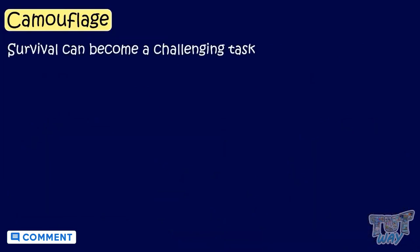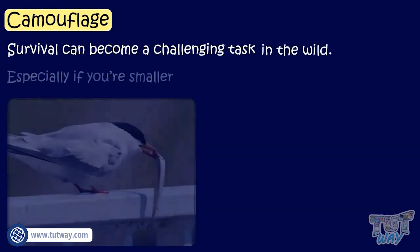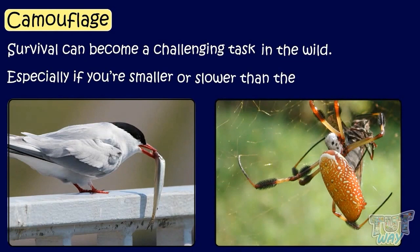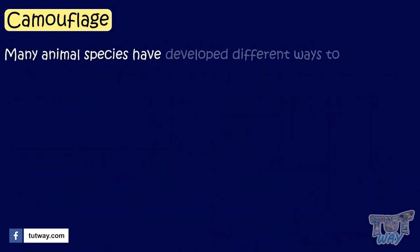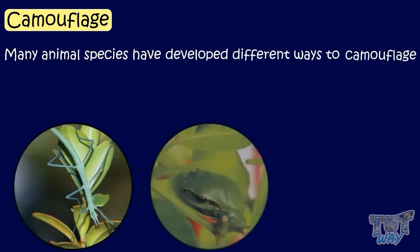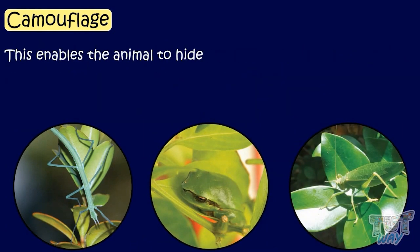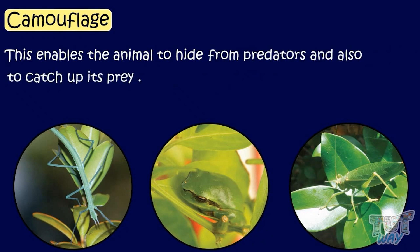Camouflage. Survival can become a challenging task in the wild, especially if you're smaller or slower than the possible predators. This is why many animal species have developed different ways to camouflage, that is, blending itself with the environment. This enables the animal to hide from predators and also to catch its prey. Let's have a look at some examples.